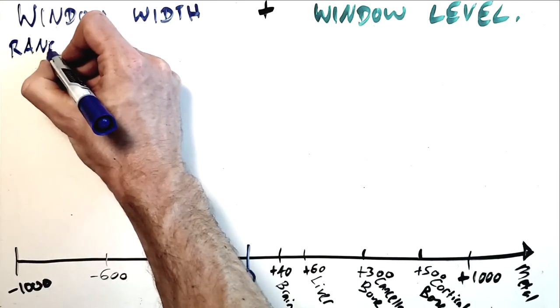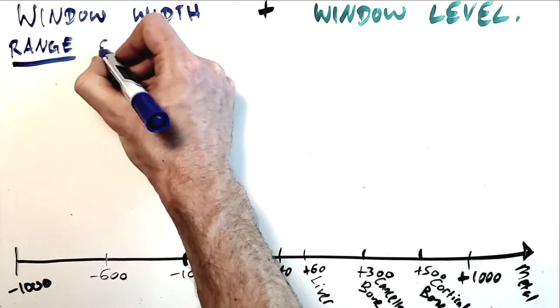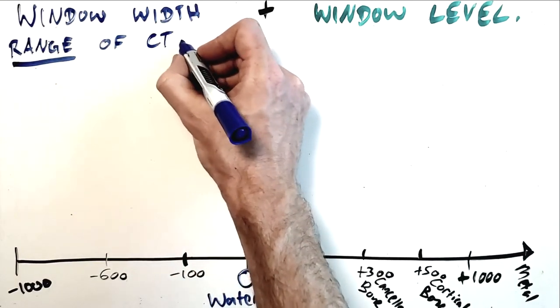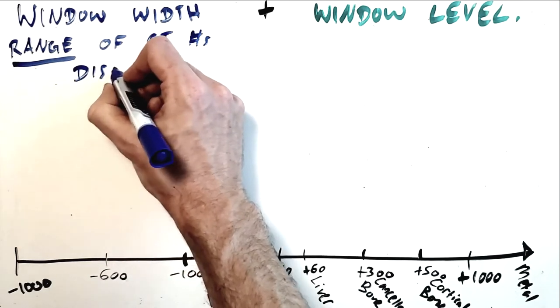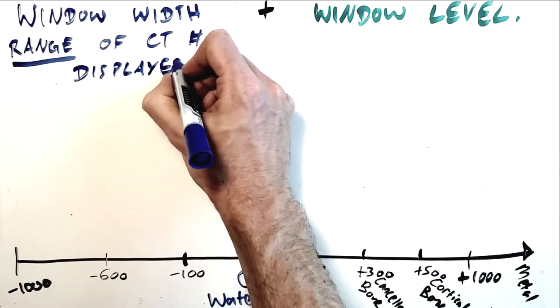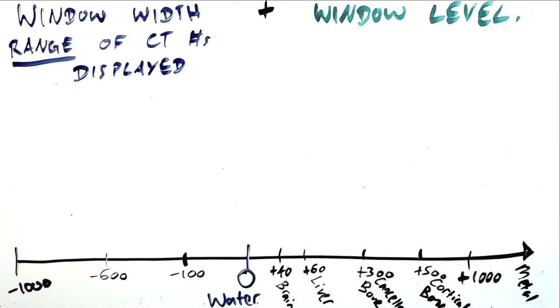Once the scanner has calculated those CT numbers and performed reconstructions, the numbers themselves are constant values representing their respective voxels. But the way that we display those CT numbers can be manipulated based on our window width and our window level.